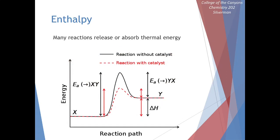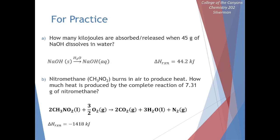We can look at this graphically with a reaction coordinate, keeping track of the energy of our reactants and products as a reaction proceeds, maybe with or without a catalyst. We can label our change in enthalpy as the energy of the products minus the energy of the reactants. We can measure this enthalpy for a reaction and use it in calculations. The change in enthalpy has units of energy — for example, sodium hydroxide as a solid dissolving to form aqueous sodium hydroxide has an enthalpy of 44.2 kilojoules per mole.